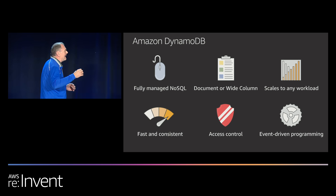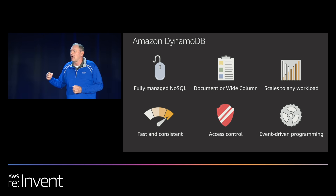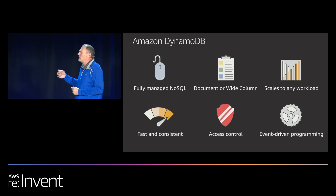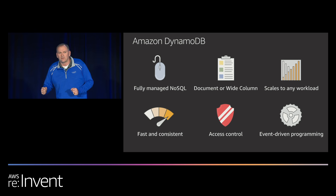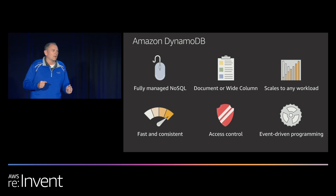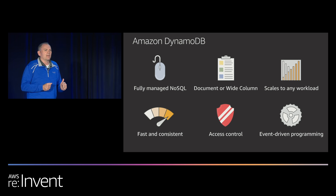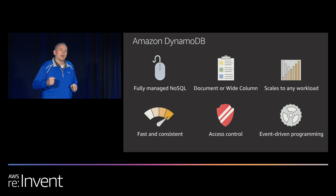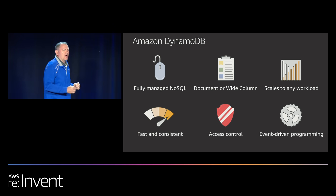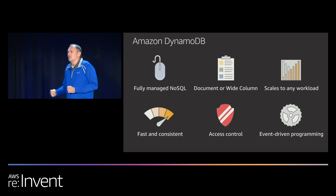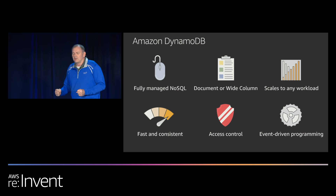DynamoDB is fast and consistent at any scale. We have examples of single tables exceeding 7 million transactions per second. On Prime Day 2019, the Amazon CDO tables hit 54.5 million transactions per second, and we shattered that record again over Cyber Monday and Black Friday — numbers that are massive and not something you see from legacy NoSQL providers.